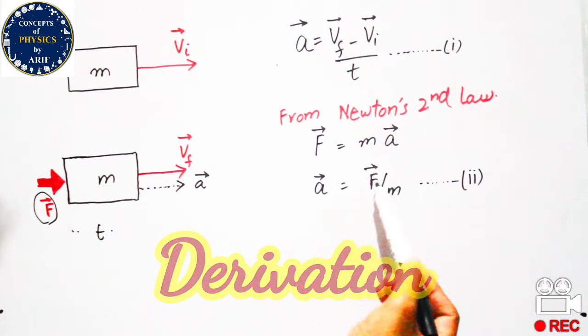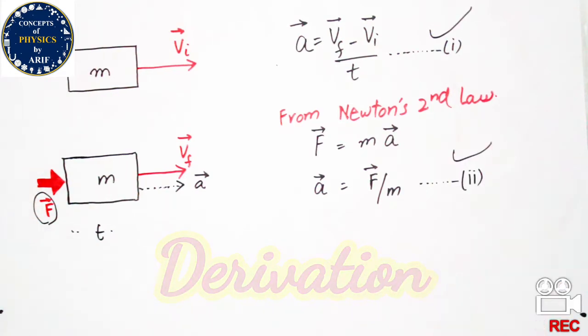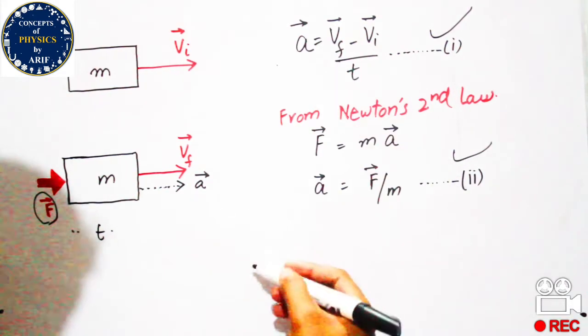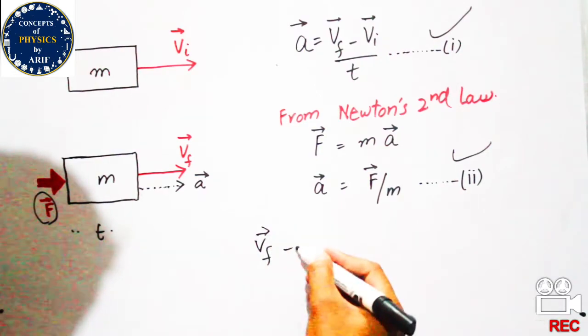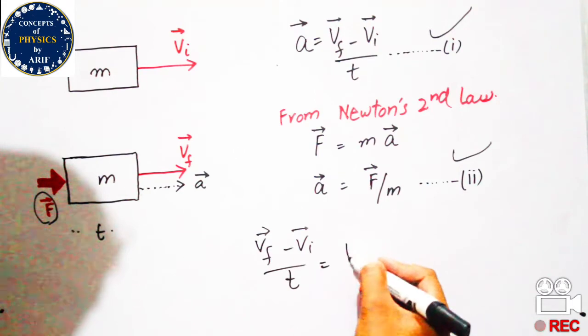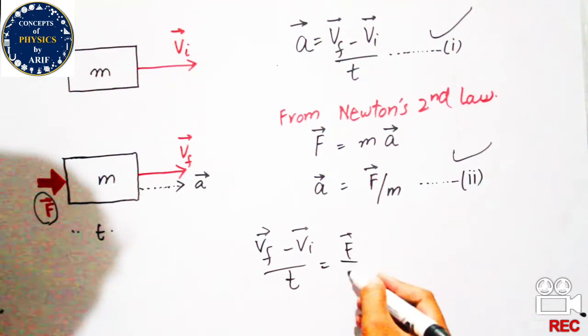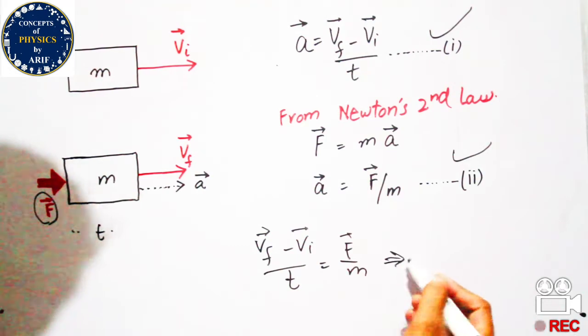From expression 1 and expression 2, we can equate that (vf - vi) / t = F / m. We will cross multiply.